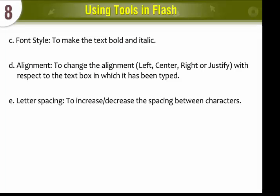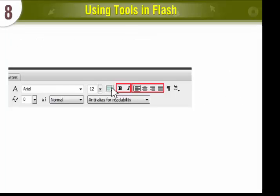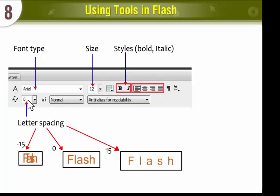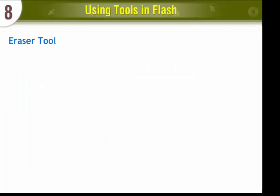Additional text properties include Letter Spacing to increase or decrease the spacing between characters, Font Type, Size, Styles (Bold, Italic), Letter Spacing, Color, and Alignments.